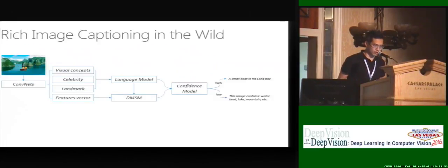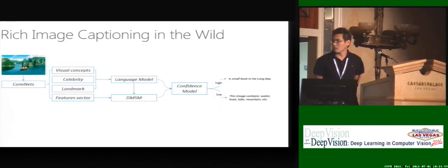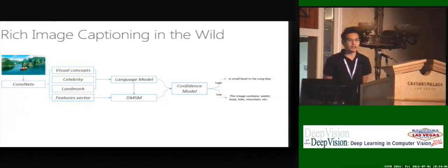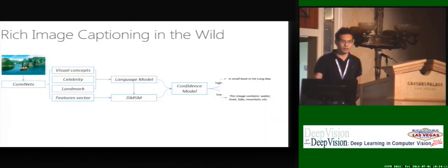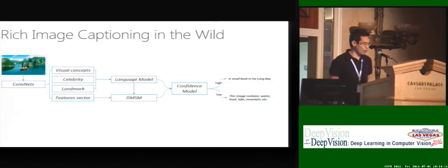Our work addresses those three major challenges, and this is the architecture of our system. I will explain more about this architecture later at the poster, but the overall view is that it's not as simple as feeding convolutional network features to an RNN. Our model is actually compositional and contains quite a few modules.